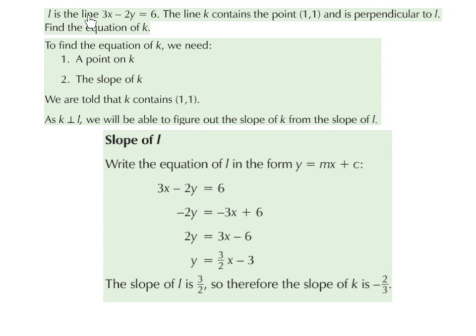L is the line 3x minus 2y equals 6. The line k contains the point and is perpendicular to L. Find the equation of k.